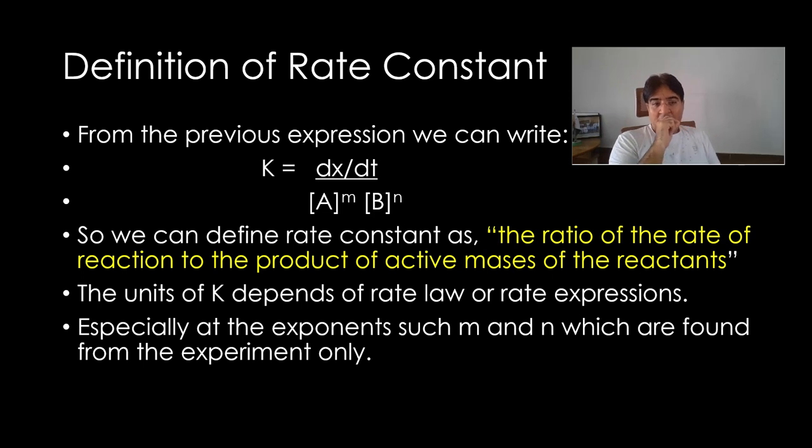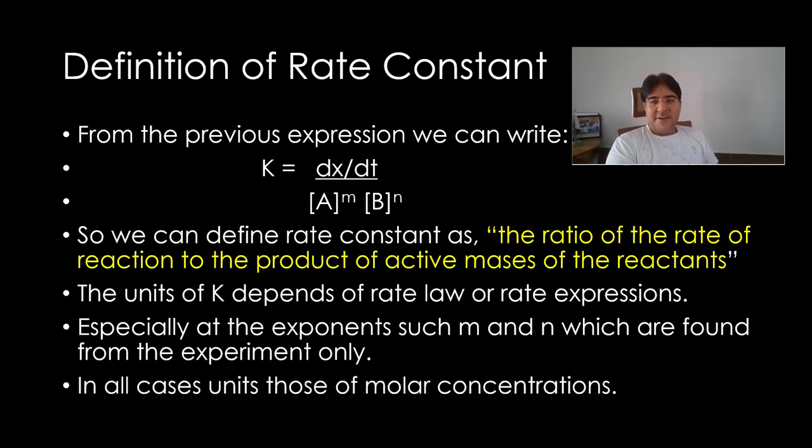Maybe A to the power 2 or A to the power 1 or A to the power 0, it also happens. So the unit of the rate constant depends on the rate expression. Because if there is one mole, it's mole per dm cubed. If it's squared, it's mole squared per dm cubed whole squared. If it's cube, like that. So K has changing units for different rates. Especially the exponents m and n, we write from the equation of the book, but in real life they come from the experiments only.